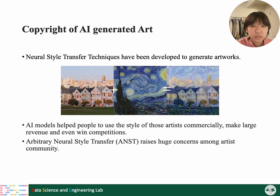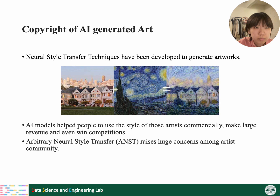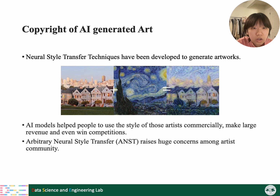Let's first introduce the background of this paper. Recently, Neural Style Transfer techniques have been developed to create new artwork. One can take an artistic style from a given source image and transfer it to generate a picture with a specific content from a given content image. As shown here, a style image of a starry sky is released publicly. A user could upload any content image, like a building image, to create a starry night-like building. With the development of such techniques, people could use any artist's style commercially, make large revenue, or even win competitions. So arbitrary Neural Style Transfer models create huge concern among the artist community.